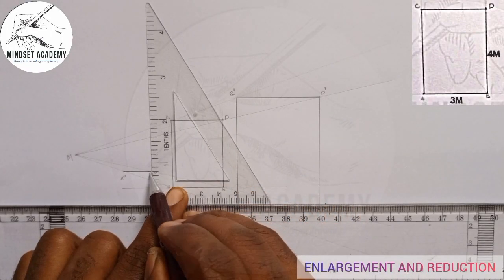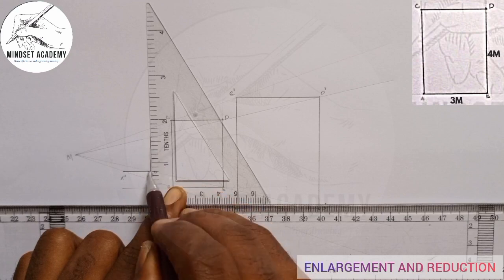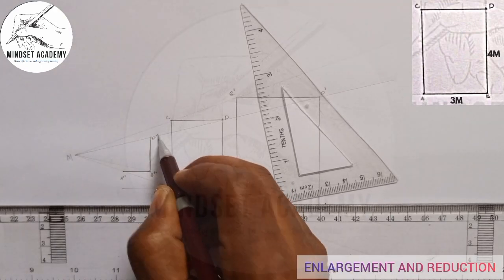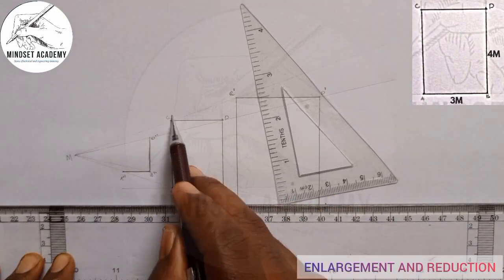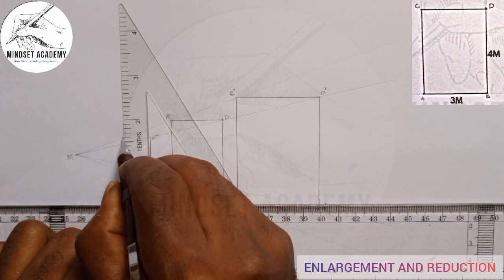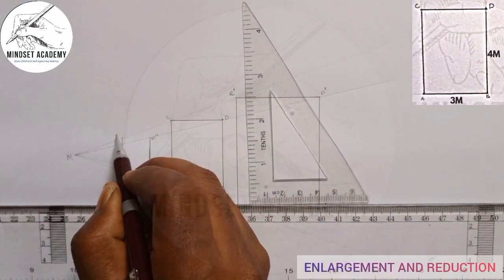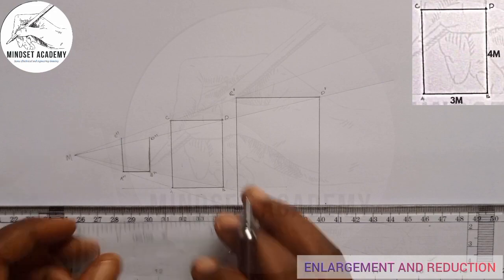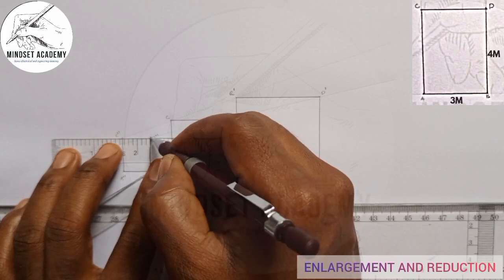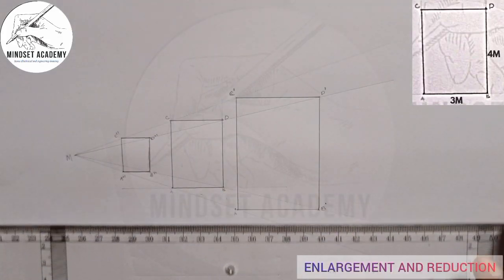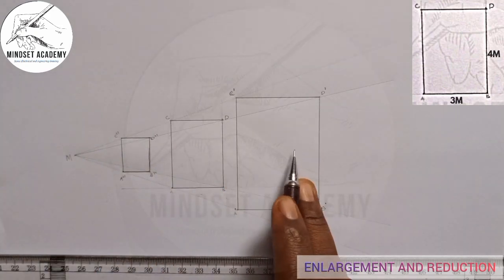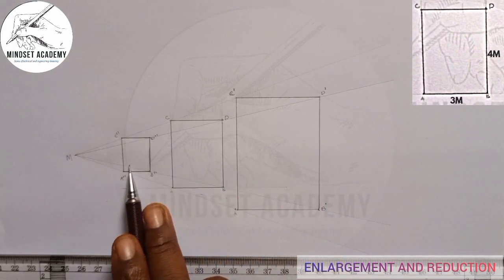This is the line of D, I'll call it D prime prime. Then the next one, A to C, and this is the line of C. Now move this to that point. I'll call this C prime prime. Now join D and C together. So what have I just done? I have just reduced. This is the original object here, this is the enlarged object, and this is the reduced object.